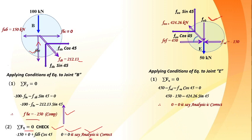Continue traversing joint to joint, always selecting one with only two unknowns. Apply sigma Fx and sigma Fy to find member forces. If a result is negative, the magnitude is correct but the assumed direction is wrong — it is compressive rather than tensile. Transfer all found values back to the original truss figure after each joint.